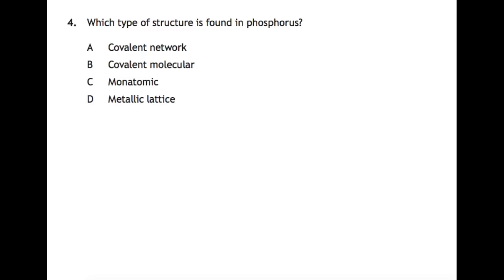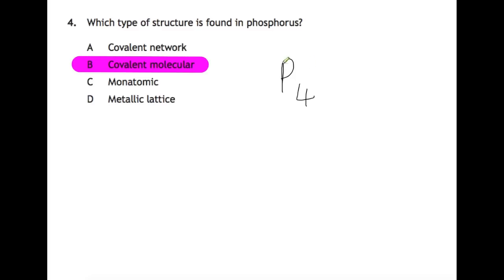Which type of structure is found in phosphorus? Phosphorus is one of the molecules that you need to learn, and comes in P4 molecules. This means that the bonding found in phosphorus is covalent molecular.